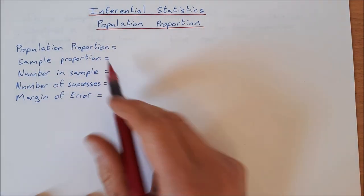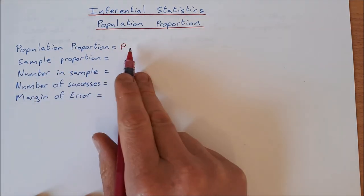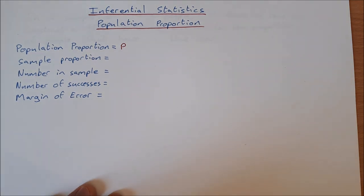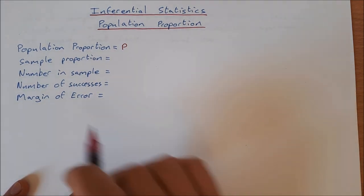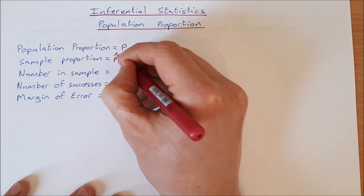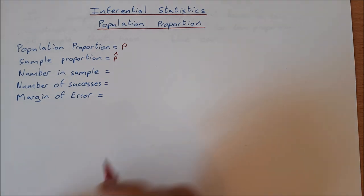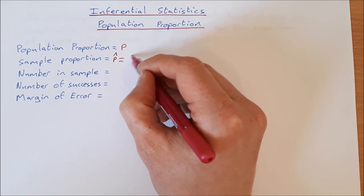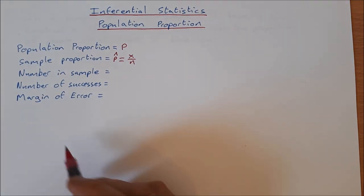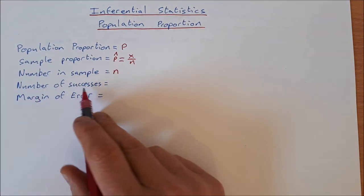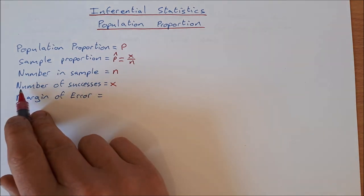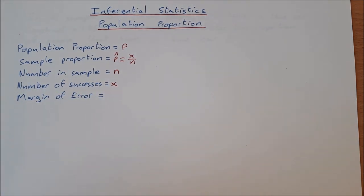Population proportion is called p — that's the proportion of the population that has the thing we're interested in. The sample proportion is p-hat, the proportion of a sample. For example, if we sample 500 people and 100 have been to a certain country, that gives a sample proportion of 100 over 500, which is 0.2. P-hat is calculated as x over n, where n is the number in the sample and x is the number of successes — whatever you're interested in.